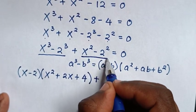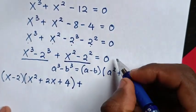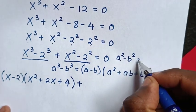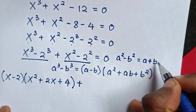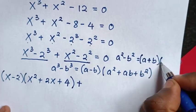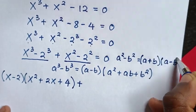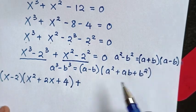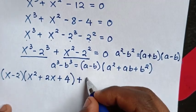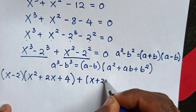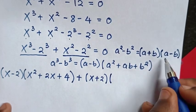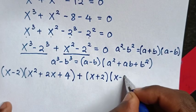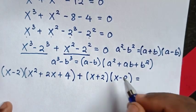For the second part, we apply the difference of squares rule: a² - b² = (a + b)(a - b). So x² - 2² factors as (x + 2)(x - 2), giving us (x - 2)(x² + 2x + 4) + (x + 2)(x - 2) = 0.